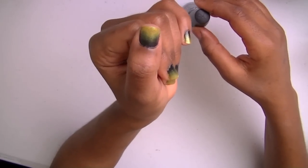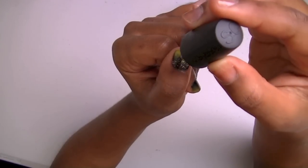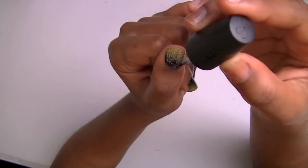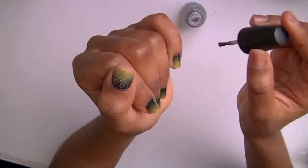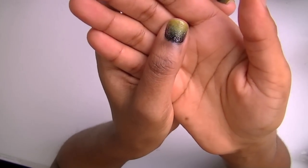This is the thumb, and I'm just going to go ahead and paint it. And that's what it looks like with glitter.